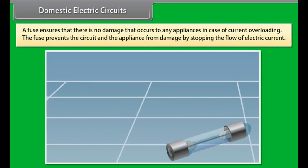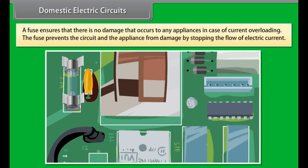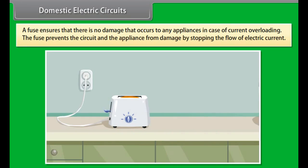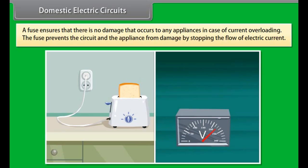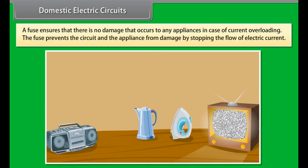A fuse is an important part of all circuits. It ensures that there is no damage that occurs to any appliances in case of current overloading. Overloading occurs when the live wire and the neutral wire come in contact with each other or there is a rise in the supply voltage. In this case, the fuse prevents the circuit and the appliance from damage by stopping the flow of electric current.